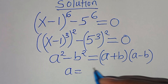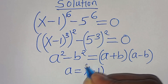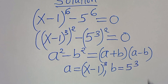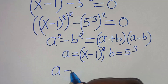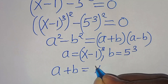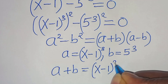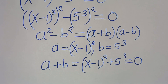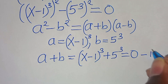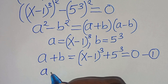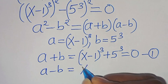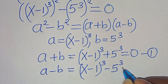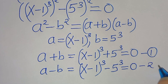Here a equals (x minus 1)^3 and b equals 5^3. So (a plus b) gives us (x minus 1)^3 plus 5^3, equals 0 — call this equation 1. And (a minus b) gives us (x minus 1)^3 minus 5^3, equals 0 — call this equation 2.